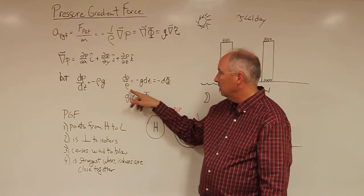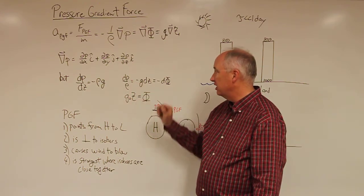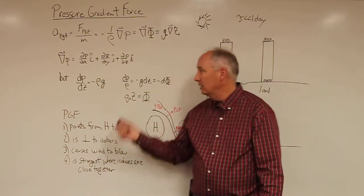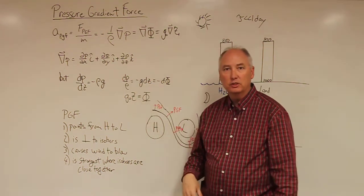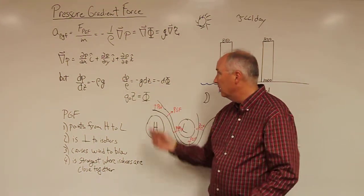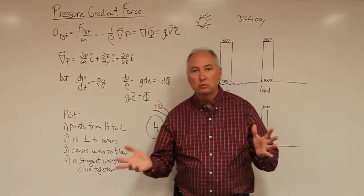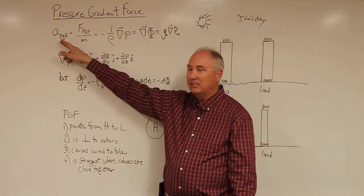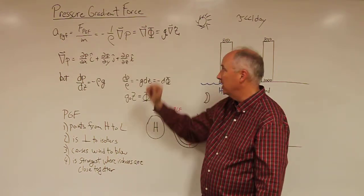And if you go ahead and solve for dp over rho, you'll see that that's minus g dz. And if you recall, the g dz is actually the differential of the geopotential. So we can take that and put it back into the equation, and we now have a different form for the acceleration due to the pressure gradient force is also equal to the gradient of the geopotential.